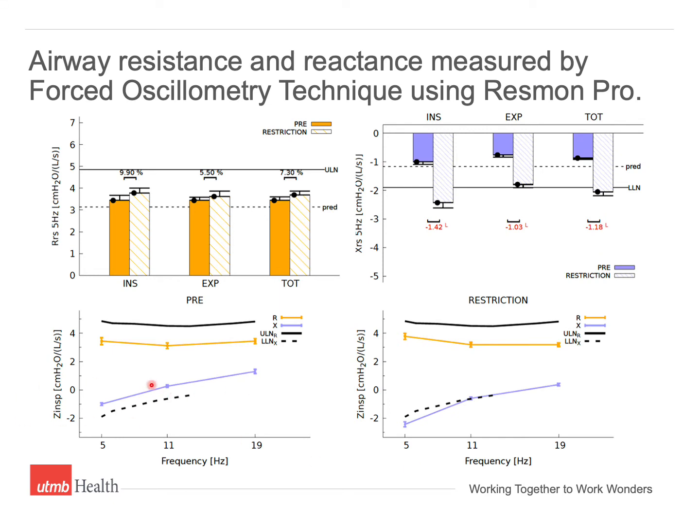The Goldman graph at the bottom shows the average resistance and reactants measured at 3 frequencies over 10 breaths. The solid black line is the upper limit of normal for resistance, and the dashed black line is the lower limit of normal for reactants. Here, you can also see the change in reactants post-chest wall restriction.